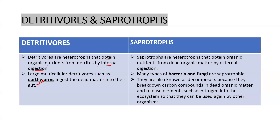Saprotrophs — we can understand them as bacteria and fungus. What they do is they will not eat. They release enzymes outside and obtain organic nutrients from dead matter by external digestion. They release enzymes outside, converting complex forms into simple forms, and then absorb it.